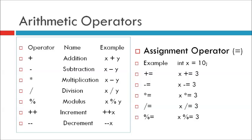Operator division (/), name: dividing — it divides one value by another, for example x divided by y. Operator percent (%), name: modulus — it returns the division remainder, for example x % y. Operator double plus (++), name: increment — it increases the value of a variable by one, for example ++x or x++. Operator minus minus (--), name: decrement — it decreases the value of a variable by one, for example --x or x--.